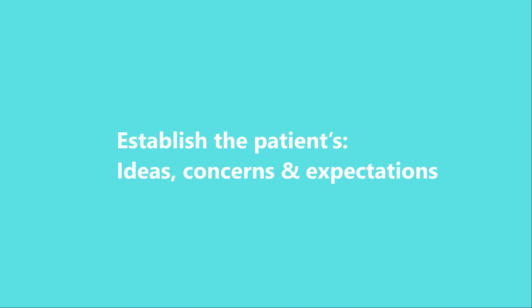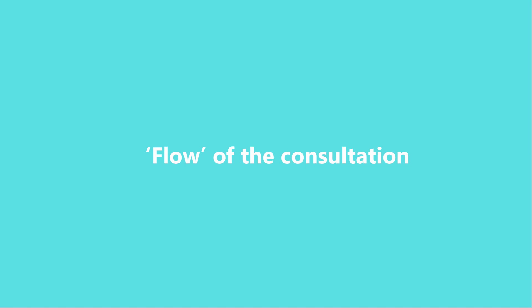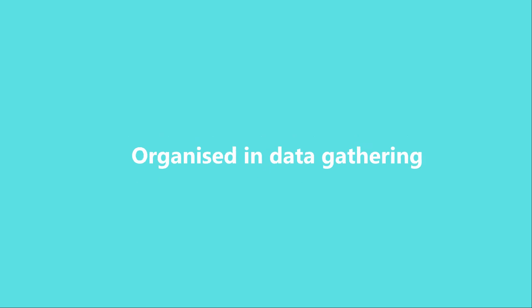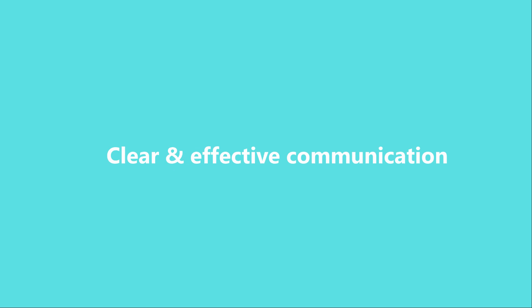A crucial part of stage two is establishing the patient's ideas, concerns, and expectations, and developing the structure of the consultation. Attention to structure is a thread that runs throughout. It ensures you're conscious of the flow. Avoid jumping from one section to a completely different section if you don't want a dysfunctional consultation. When a history is disjointed, you could miss something important. It's vital to be organized in gathering information and to communicate clearly so the consultation flows.